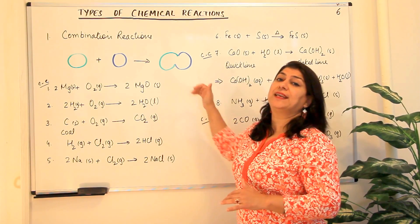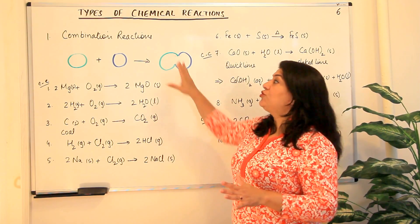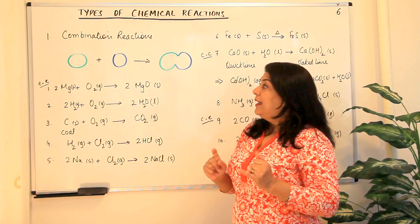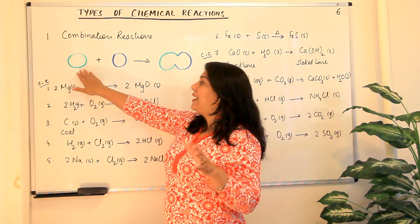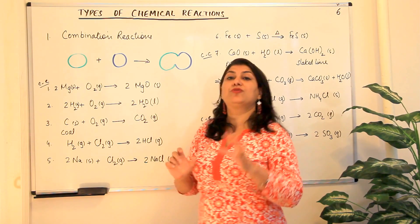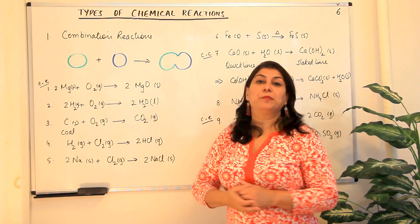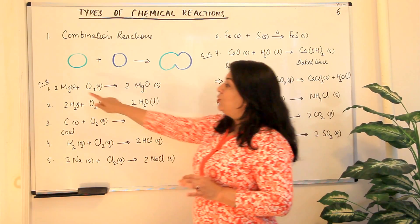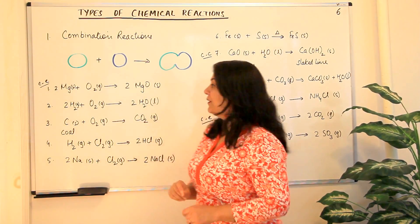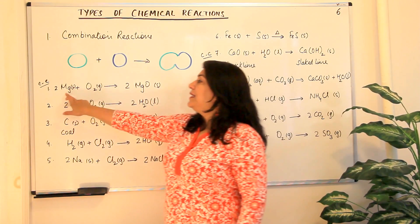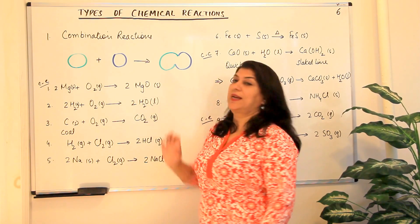There are ten different examples of combination reactions according to your book. The first case scenario is where an element combines with an element to result in the formation of a compound, and the first six examples are of that kind. The first example is magnesium combining with oxygen to give you magnesium oxide.